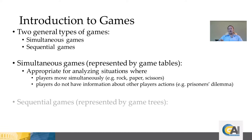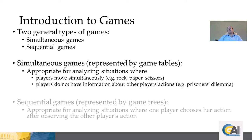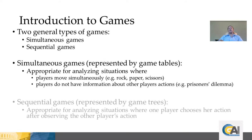The other type of game is called a sequential game. These are represented by game trees instead of game tables, and they are appropriate for analyzing situations where one player moves first and then the second player observes that player's actions and makes a decision. Unlike in simultaneous move games, there's information flow between parties before the later player gets to decide, and those circumstances require a different type of analysis. Today, we're going to be considering simultaneous move games only.